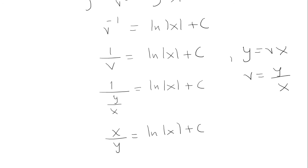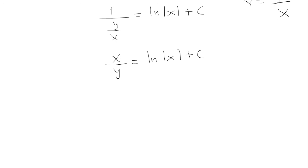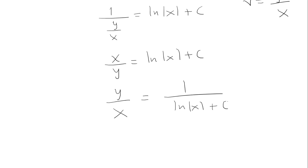My goal is to solve for y. So what we can do here is flip both sides. So we'll put 1 over the entire left side equals 1 over the entire right side. And now we can multiply both sides by x. And this is my solution.